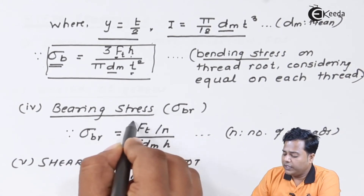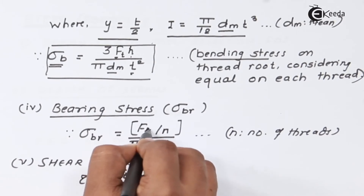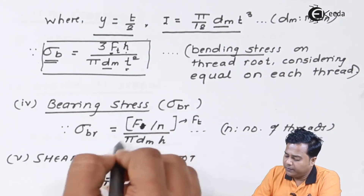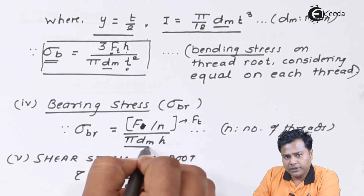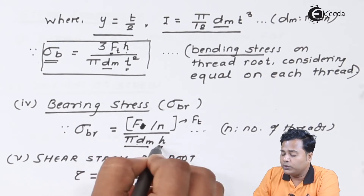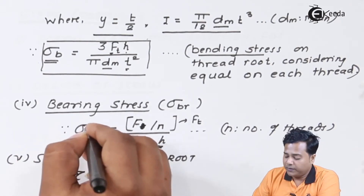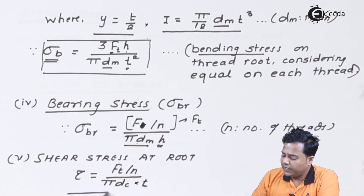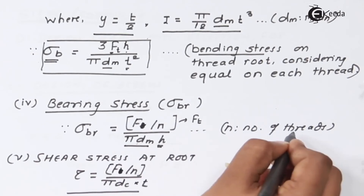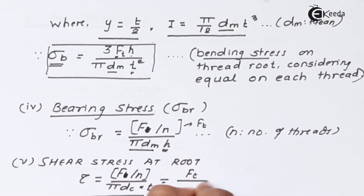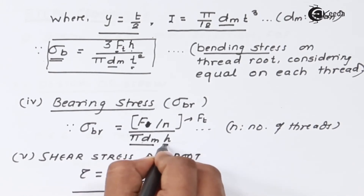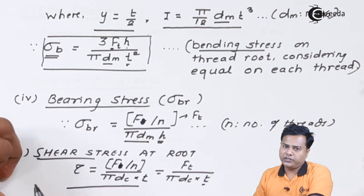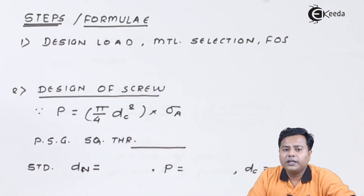Bearing stress is given by the load divided by the projected contact area: F divided by (π × d_m × h × n), where the denominator represents the circumferential area over the thread height. Shear stress at the thread root is given by ft divided by (π × d_c × t), where t is the thread thickness. Note that h is used for bearing stress and t is used for shear stress at the root.